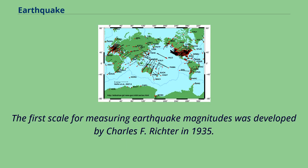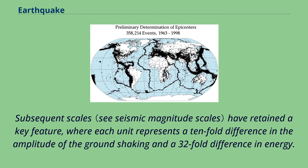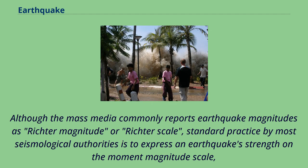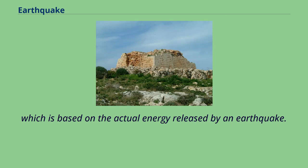The first scale for measuring earthquake magnitudes was developed by Charles F. Richter in 1935. Subsequent scales have retained a key feature where each unit represents a tenfold difference in the amplitude of ground shaking and a 32-fold difference in energy. Although the mass media commonly reports earthquake magnitudes as Richter magnitude or Richter scale, standard practice by most seismological authorities is to express an earthquake's strength on the moment magnitude scale, which is based on the actual energy released by an earthquake.